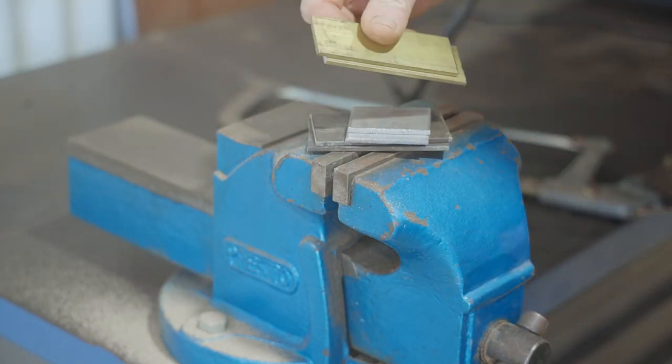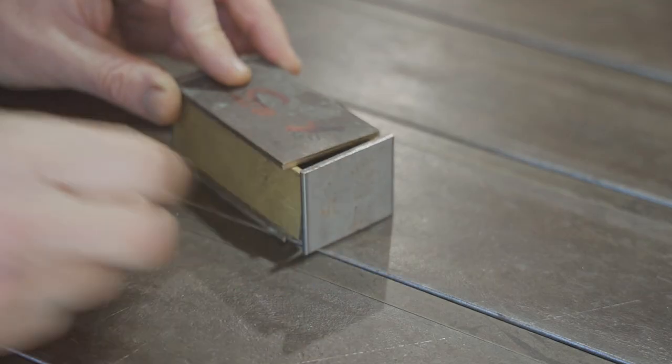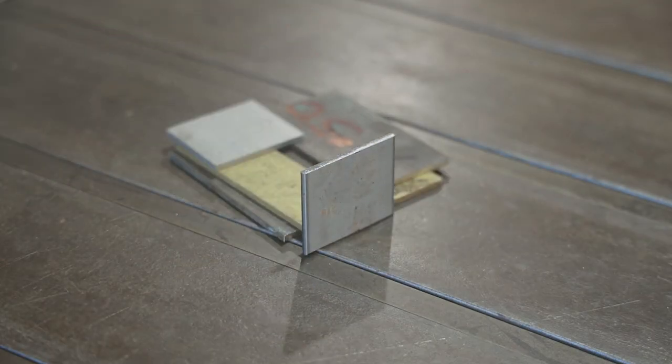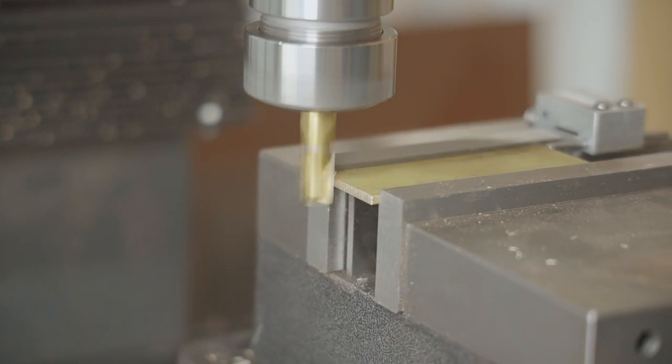That's all six pieces I need - a top and bottom, two sides and two ends. I'll start by squaring them up and trimming the sides and end pieces to size.